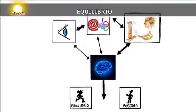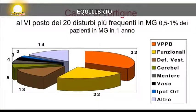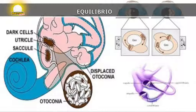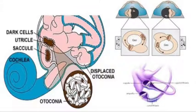Looking at the slide, we can see what happens: the patient does not know they have those small stones that exit one part of the ear and enter another zone where they should not be. So the patient, when they experience this world spinning, talks about labyrinthitis. But labyrinthitis is something else entirely — it is an inflammatory process of the zones or the nerve that keeps us in balance.